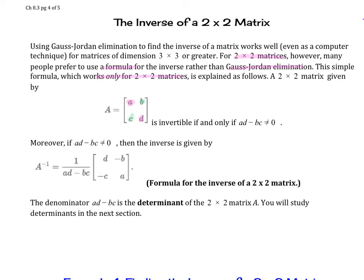It's invertible if and only if a times d minus b times c is not 0. Moreover, if ad minus bc is not 0, then the inverse is given by this.